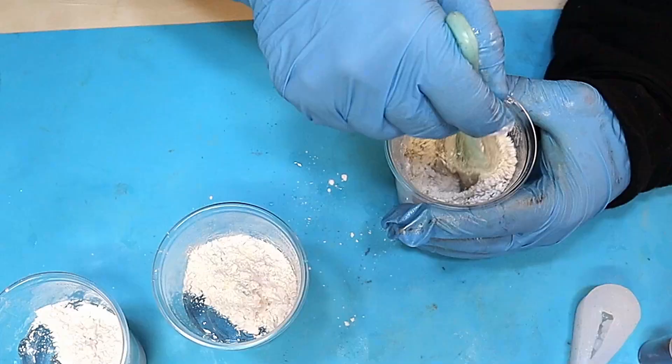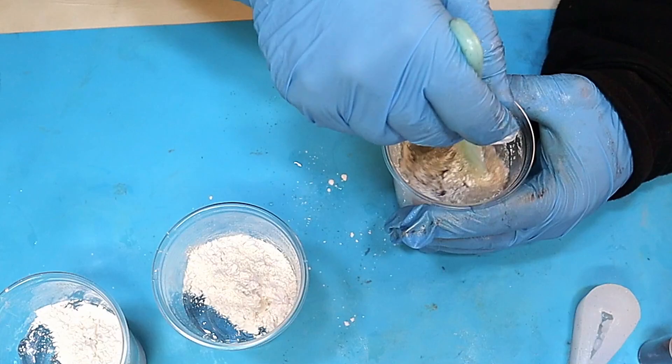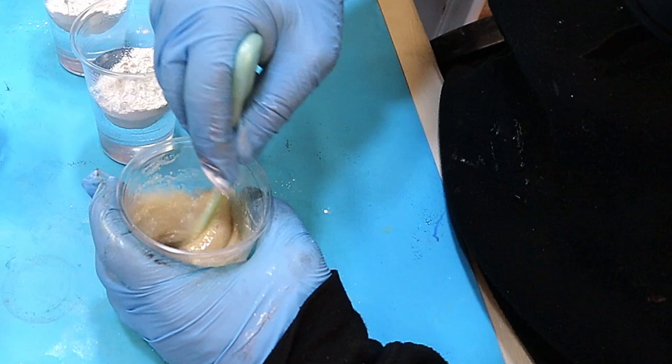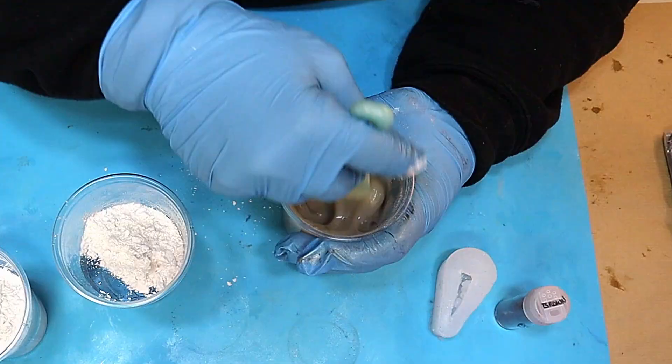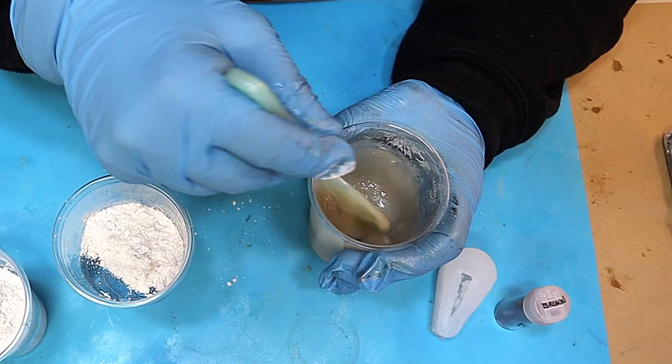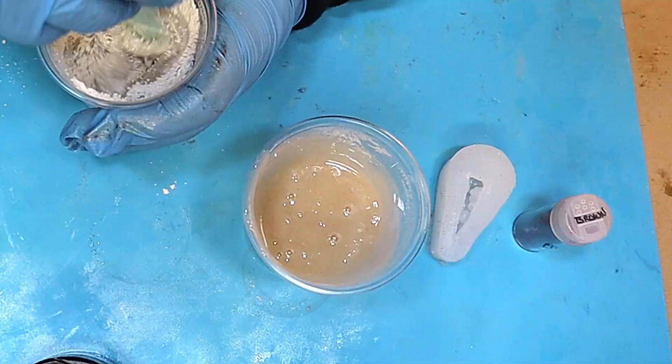So topping this up now to make sure that I've got a kind of similar amount in and giving it a mix. Now this does go quite clumpy to start with but it does mix in in a few seconds quite well. Now I'm mixing this a bit faster than I probably should have done because it does contain an awful lot of air bubbles. Can you hear my dog in the background? She's scrapping the carpet for some reason. Sorry about that.